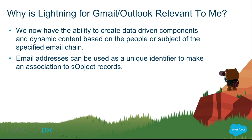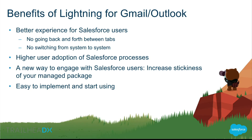So why is Lightning for Gmail and Outlook relevant to us? We have the ability to create data-driven components based off of the content within the email. Emails can be used as a unique identifier, and then you can find your contacts, leads, or associations with opportunities and accounts. For example, I can create a component that will allow sales reps to edit, change, or view information about contacts or leads directly within their email application. It's a better experience for Salesforce users — no switching back and forth between tabs or between systems — so you have a centralized location to see all of your information.